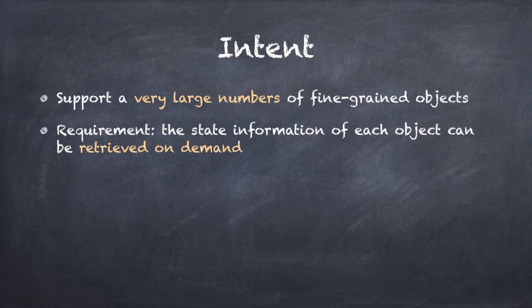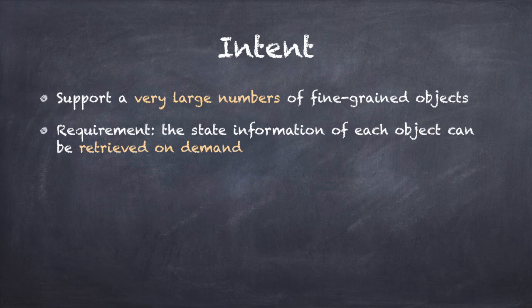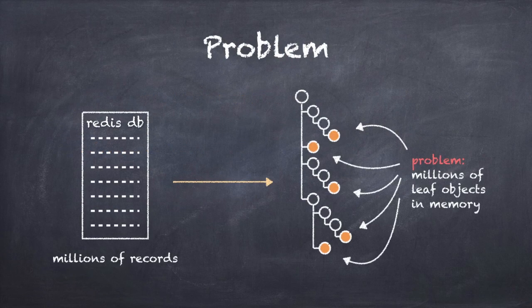Let's say I have an application where I use the composite design pattern to organize my data in a tree structure. The composite pattern organizes components into leaf objects, which cannot have children, and composite objects, which do have children. The leaves are at the edge of the tree and the composites make up the intermediate levels. I have a super-fast Redis database which contains millions of strings, and my goal is to build the composite tree structure by reading the database and copying each string into a unique leaf instance in the tree.